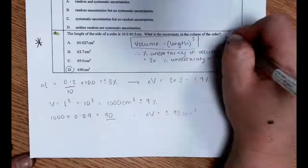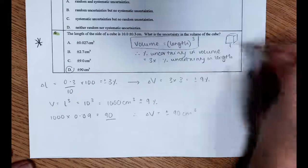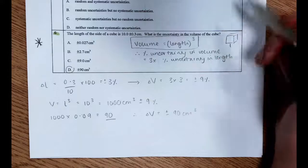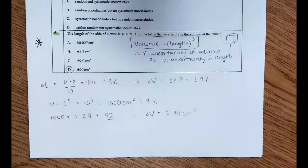Well, we know that if we have a cube with side of length L, then the volume is L cubed. And we know that if we are raising a value to a power, to find the uncertainty,